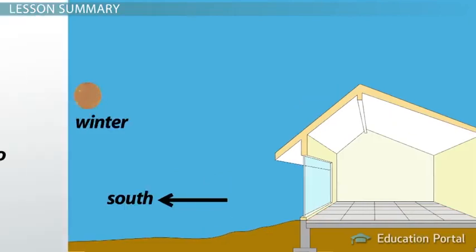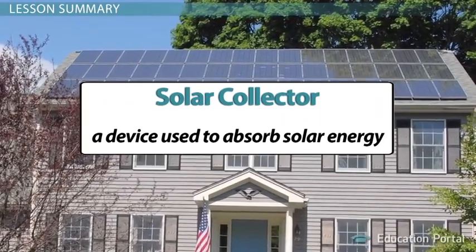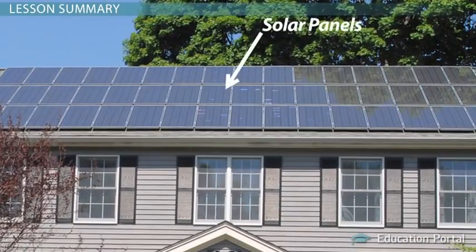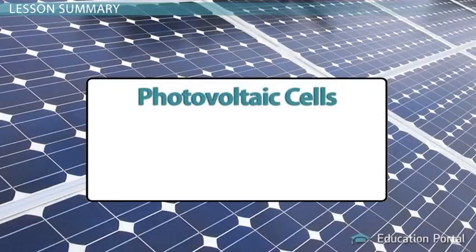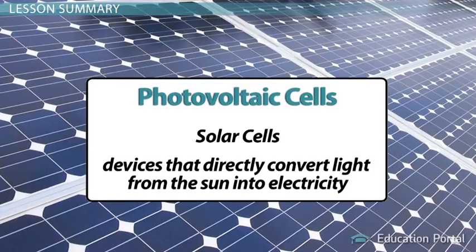Unlike passive solar heating, active solar heating uses mechanical and electrical equipment to enhance the conversion of solar energy to heat and electric power. A solar collector is a device used to absorb solar energy. Solar panels, found on rooftops of homes and other buildings, are examples of solar collectors and are composed of photovoltaic cells, or solar cells, which are devices that directly convert light from the Sun into electricity.